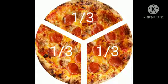Now if I have invited two of my friends, then I will cut this pizza into three equal parts. Each part is called one third. It is denoted by one upon three. Here, one upon three means one part out of three equal parts.